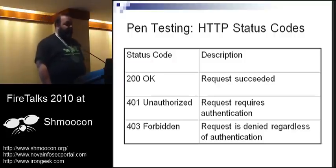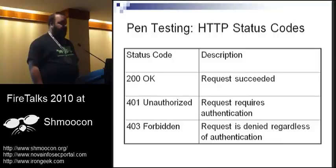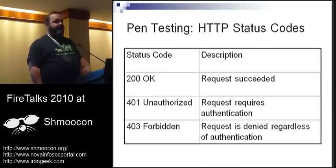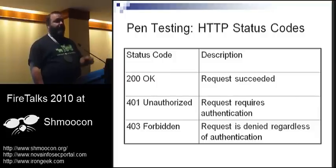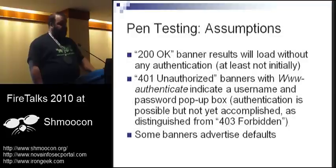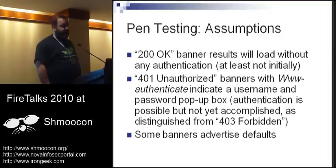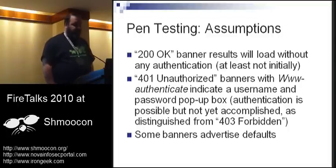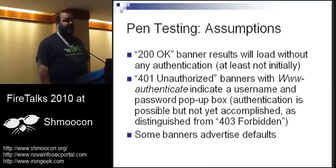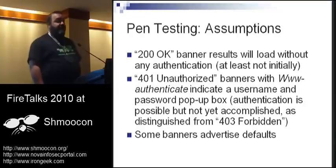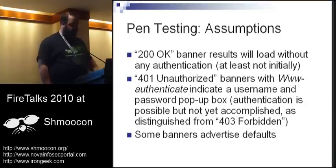A quick review of HTTP status codes. 200 OK just means the request succeeded. 401 Unauthorized and 403 Forbidden — the difference is that 401 says 'I won't show you this page, but if you provide proper authorization, you can see it,' whereas 403 basically says no. So, if you see a 200 OK, we'll be able to look at the page with no authentication at all. If you see a 401 with a WWW-Authenticate line, it's going to require a username and password — probably a pop-up box. Also, some banners advertise default usernames and passwords, which we can use.